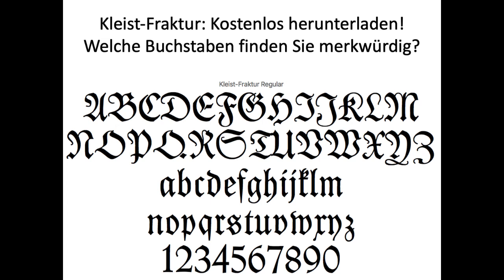Here's one version you can actually download for free — it's called Kleistfraktur. Kleist is one of the darlings of German literature, who lived from 1777 to 1811. You can download it kostenlos. The question posed is: welche Buchstaben finden sie merkwürdig — which letters do you find notable? This is a computerized version, not exactly what you'd get from a real text in Frakturschrift, but an approximation based on what computers can do nowadays.